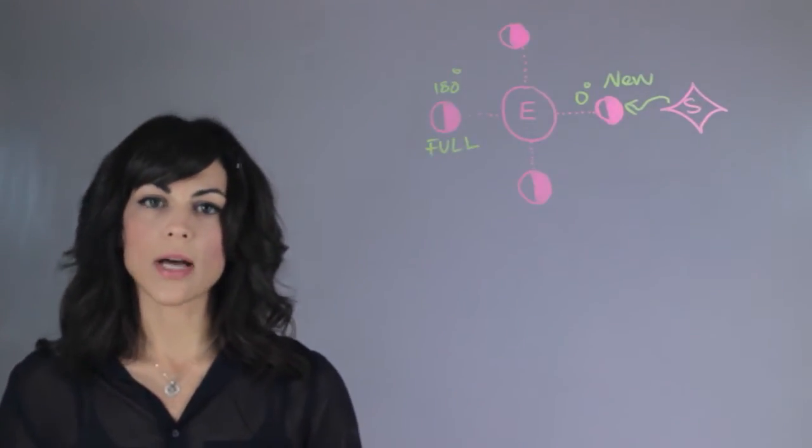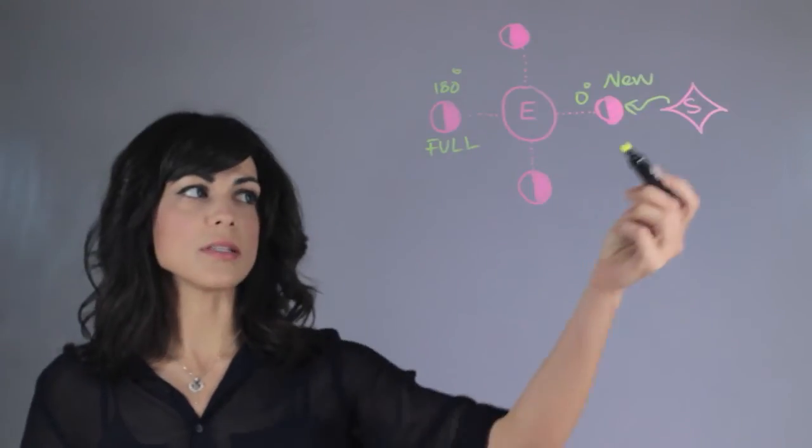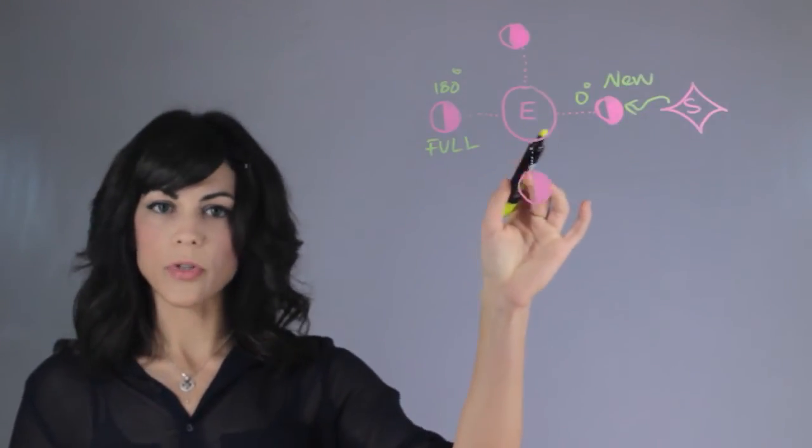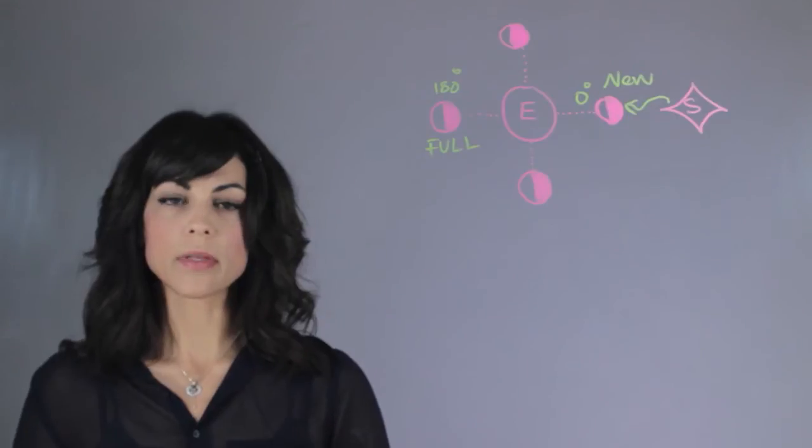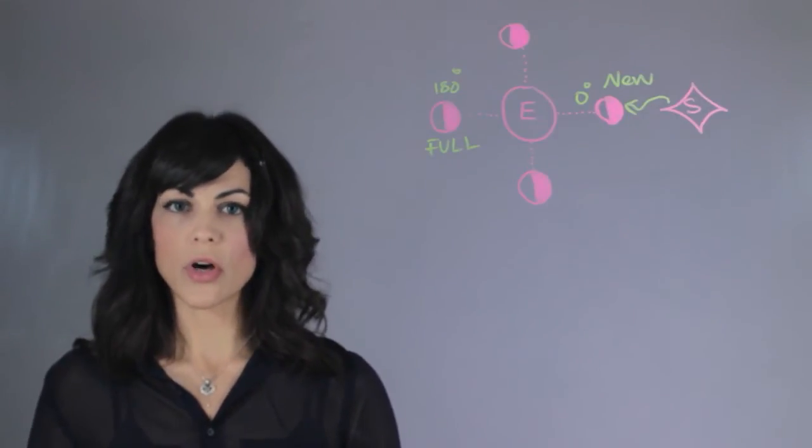What does this mean for tides? For tides, that means that the gravitational pull of the Sun and the gravitational pull of the moon are adding up. Therefore, the gravitational forces are stronger.